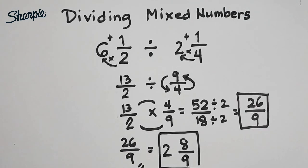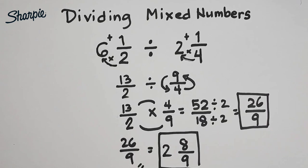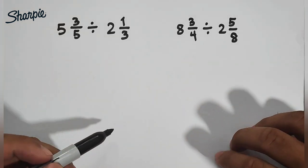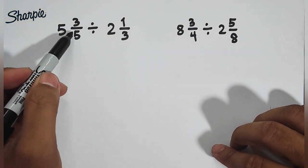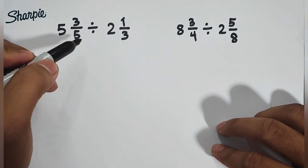So in the next part of our video, we will continue our discussion wherein I will give you another example on how to divide mixed numbers. Now let's continue. We have here 5 and 3 over 5 divided by 2 and 1 thirds.